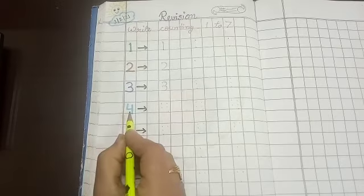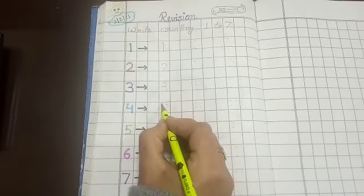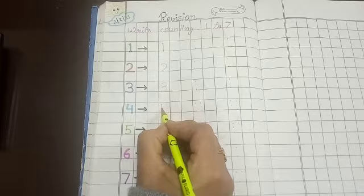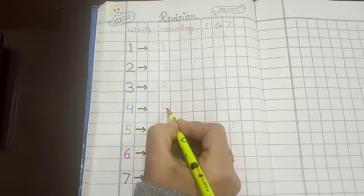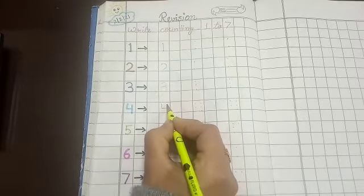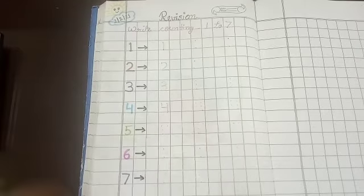And which number is this? 4. Dot say dot the small one, then sleeping line. Stop. And then big one. Ban gaya 4.